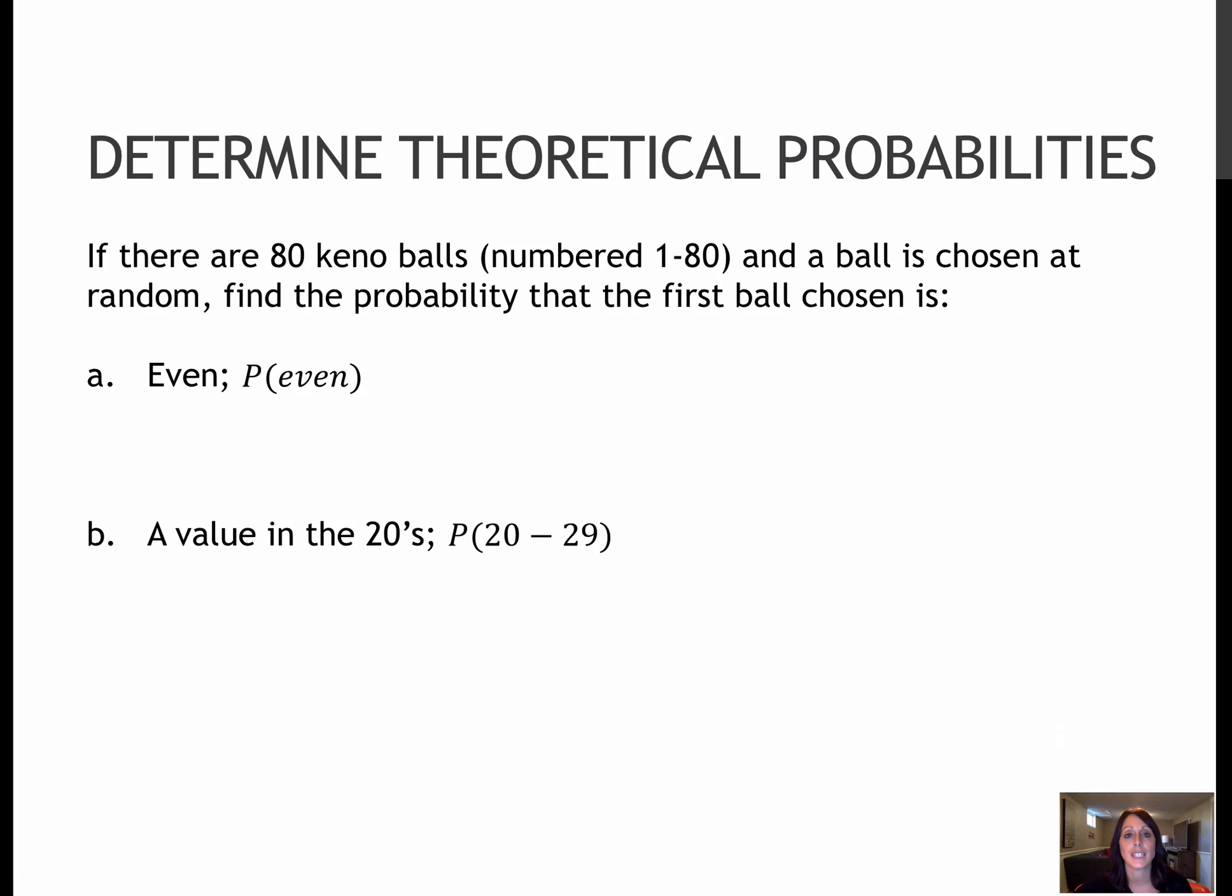So for instance, I don't know if any of you have played keno before, but if there are 80 keno balls numbered one through 80, and a ball is chosen at random, find the probability that the first ball chosen is even. So you might see it written like this: P(even), which means the probability that it's even. Well, I know that the number of total keno balls is 80, and I know that 40 of those balls would be even, and 40 would be odd. So 40 over 80, which means one half.